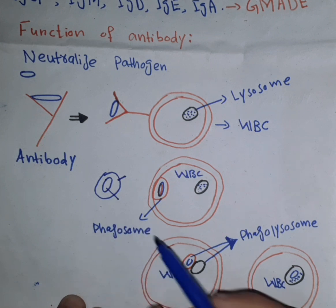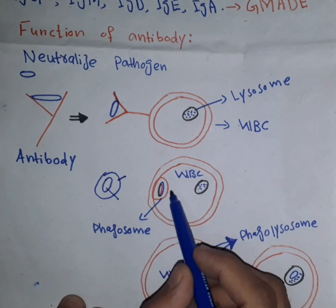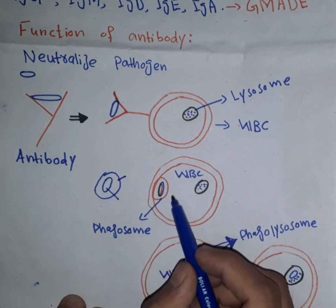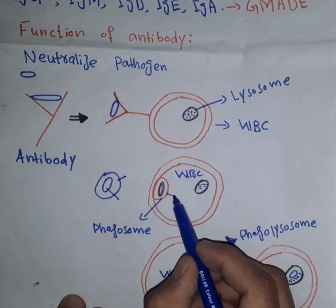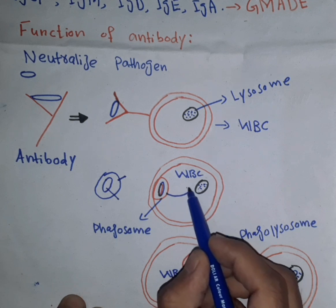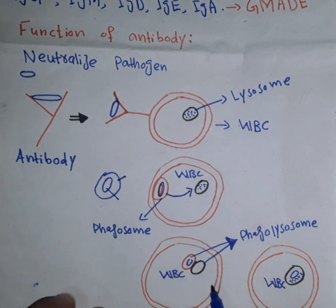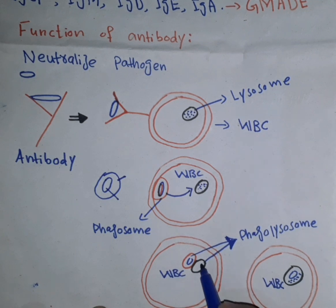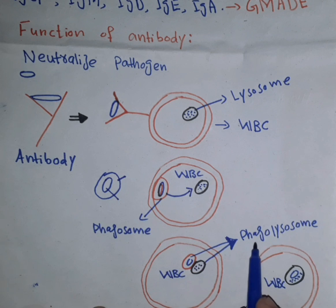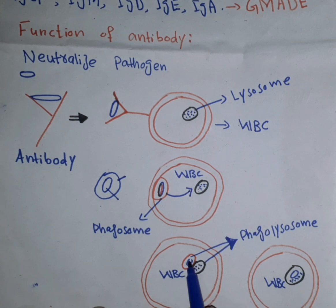The phagosome contains the microorganism or the pathogen. The phagosome is associated with the white blood cells. The pathogen inside the phagosome is then broken down by enzymes.